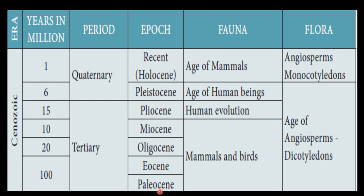Within these periods, the epochs are: Paleocene, Eocene, Oligocene, Miocene, Pliocene, and Pleistocene. In the Pleistocene is the Quaternary era. Then comes the Holocene, that is the recent epoch.